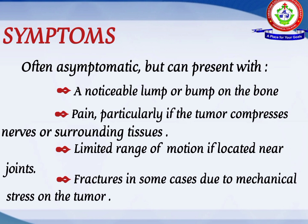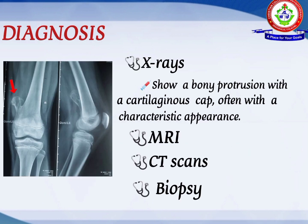Next we see about the symptoms. Osteochondroma is often asymptomatic, but can present with a noticeable lump or bump on the bone, pain — particularly if the tumor compresses a nerve or surrounding tissue — limited range of motion if located near a joint, and fracture in some cases due to mechanical stress on the tumor.